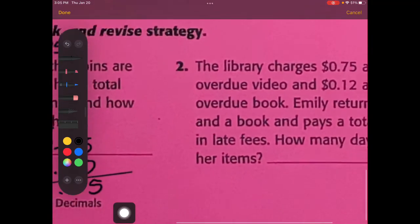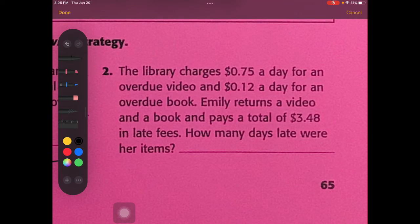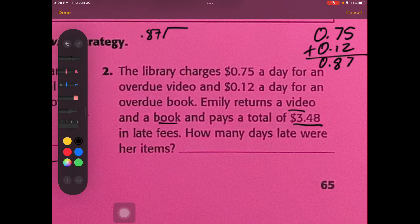The library charges 75 cents a day for an overdue video and 12 cents a day for an overdue book. Emily returns a video and a book and pays a total of $3.48 in late fees. So how many days late were her items? So she had a video and a book, so let's add those together: 75 plus 12 equals 87 cents. So that's the cost per day. A couple of ways you could do this. You could divide it and do 0.87 divided into 3.48. Then you could move that decimal over, which you guys are familiar with, so you'd have 348 divided by 87. You could do it that way. Or you could just add them together, another strategy, to see until you get to the 348.